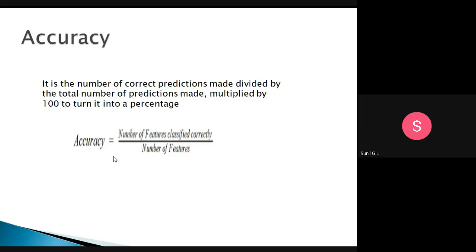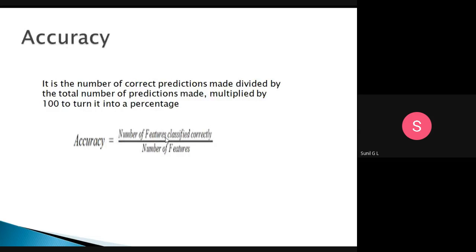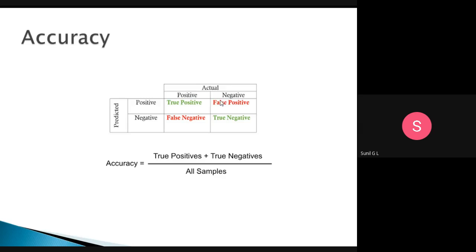Assume we have 20 data sets. Our model needs to find how much it will predict positive correctly and how much negative correctly. That is the total number of features classified correctly. Suppose you have 20 features and the model correctly predicts 10 — that is 10 divided by 20, which gives 50% accuracy. This is the number of features classified correctly divided by total number of features.